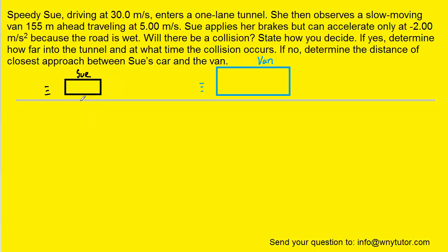And so, to begin this problem, we're going to let this position here, where Sue is initially located, we're going to call that initial position equal to zero. And that means that for the van, the initial position is going to be 155, since the question states that the van is 155 meters ahead of Sue.